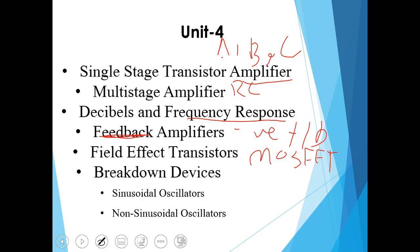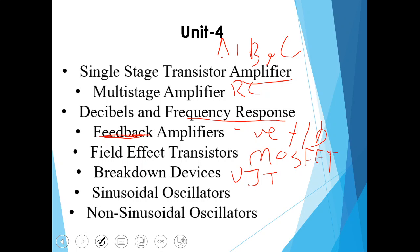Next chapter is breakdown devices where we'll study about UJT, relaxation oscillator, silicon controlled rectifier, silicon controlled switch. Next chapter in this unit is sinusoidal oscillator where we'll study comparison between oscillators and amplifier, classification of oscillators, frequency stability, and type of oscillators. Last one is non-sinusoidal oscillators where we'll study about some non-sinusoidal waveforms, sawtooth generator, multivibrators like astable, monostable, and bistable multivibrator.